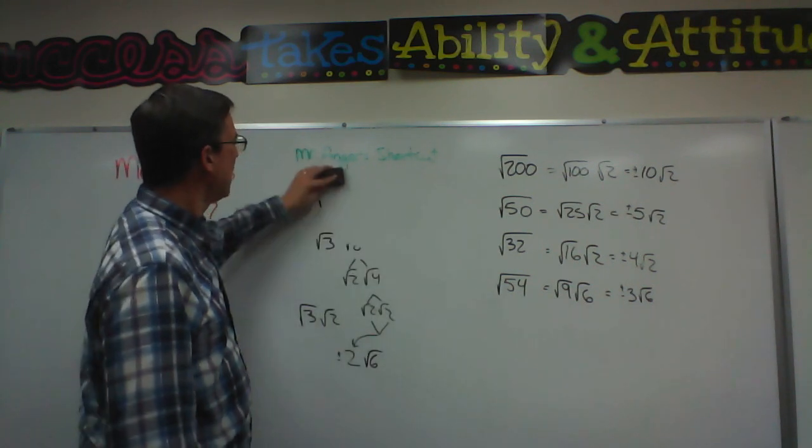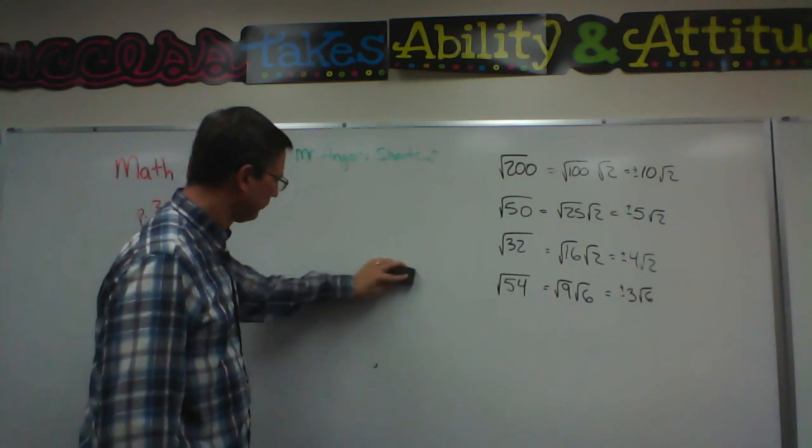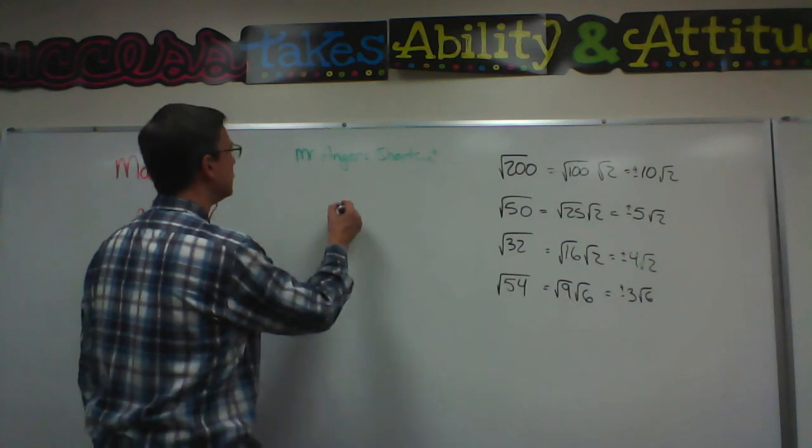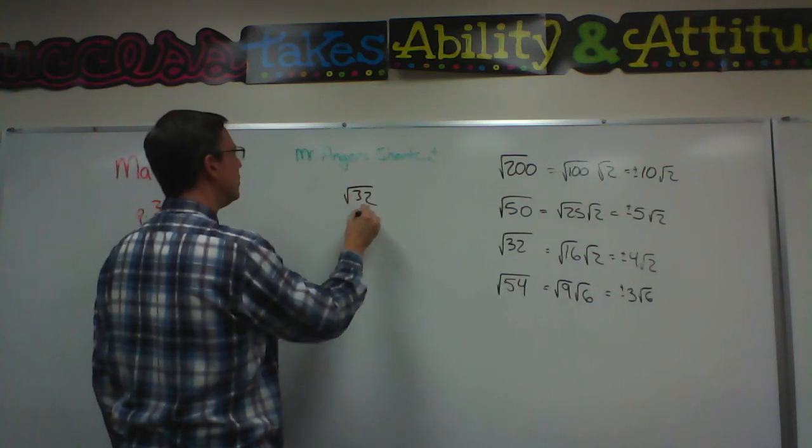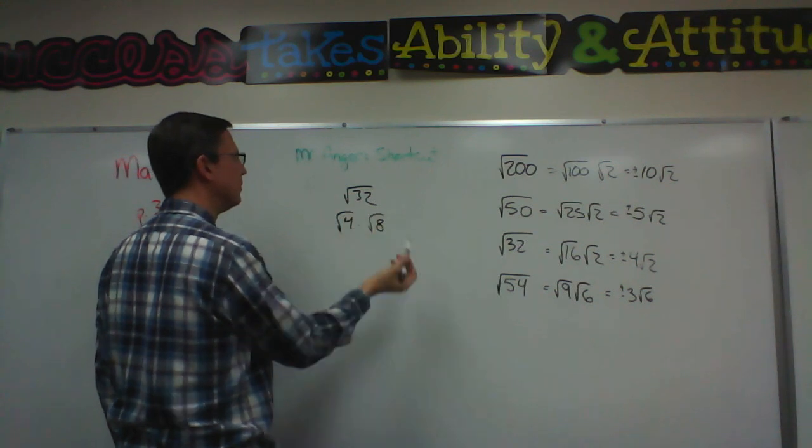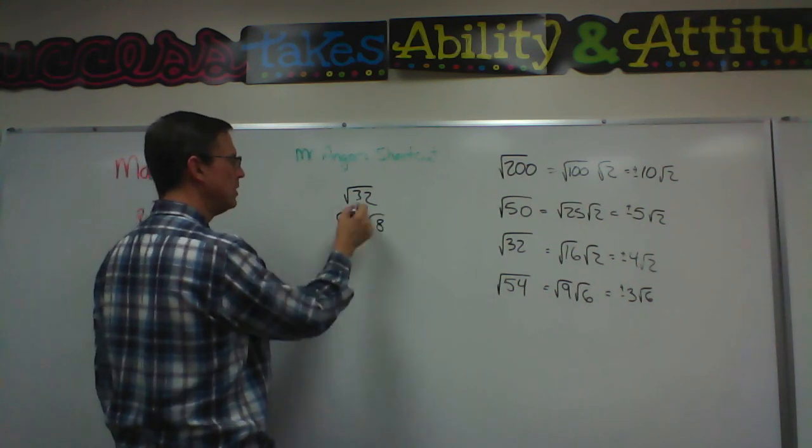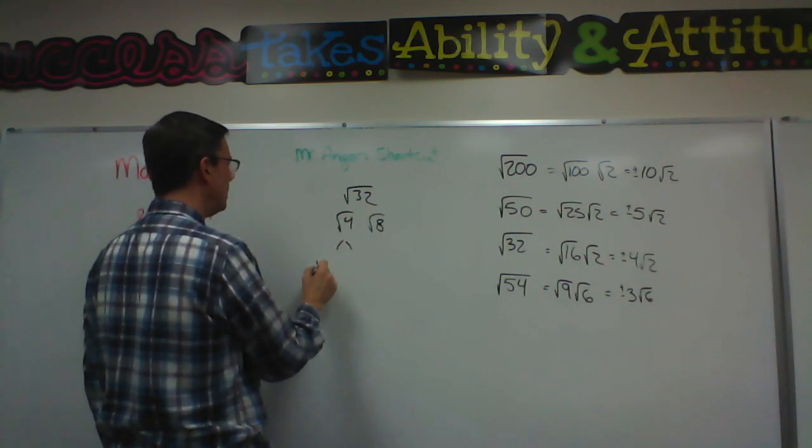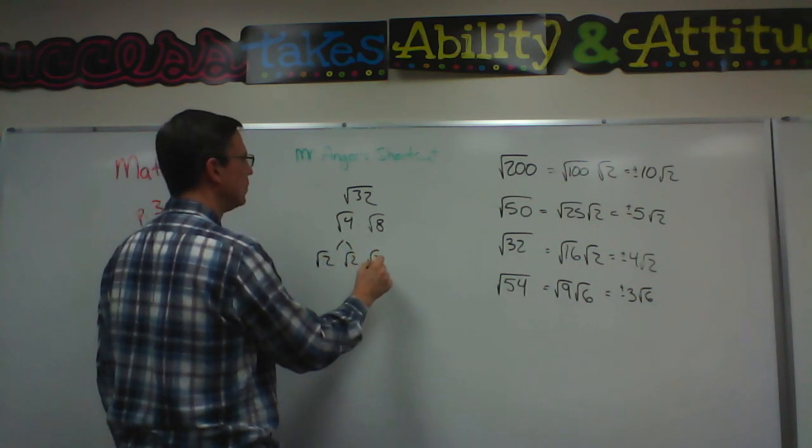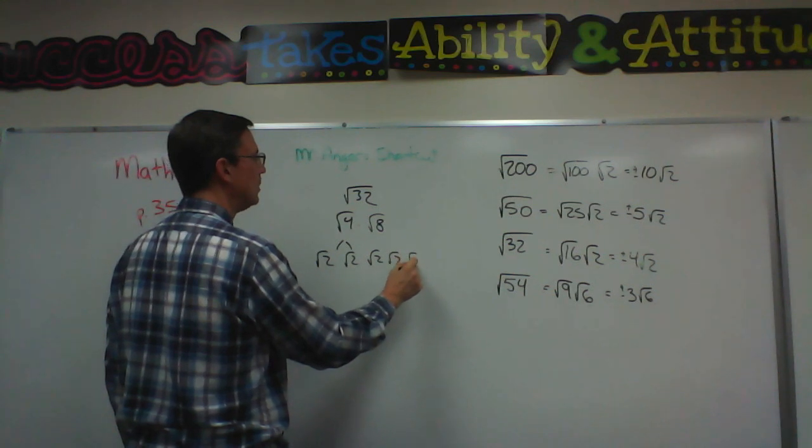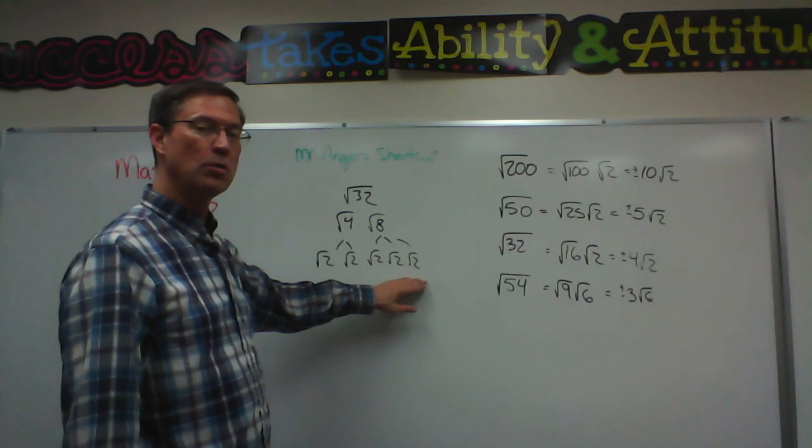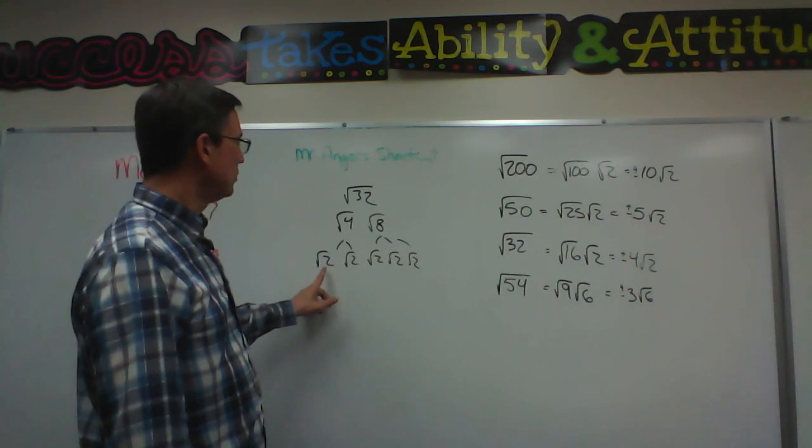Now let's go back and I'm going to take some of these problems like we had here. Let's take this 32 for instance. 32 is 4 times 8. I'm going to leave them under the radical. 4 times 8 is 32. 4 is square root of 2 times square root of 2. 8 is square root of 2 times square root of 2 times square root of 2. So I have 5 square roots of 2 all lined up here. And let's just check it.